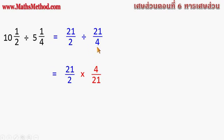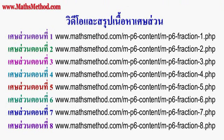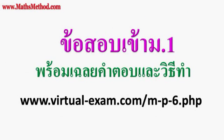หารด้วย 21 ส่วน 4 จะได้คำตอบเท่ากับคูณด้วย 4 ส่วน 21 ขั้นตอนถัดจากนี้เป็นการหาคำตอบโดยใช้วิธีการคูณเสร็จส่วน ถอนตัวเลขให้น้อยลง 21 กับ 21 ถอนกันหมดไป 2 กับ 4 คำตอบคือ 2